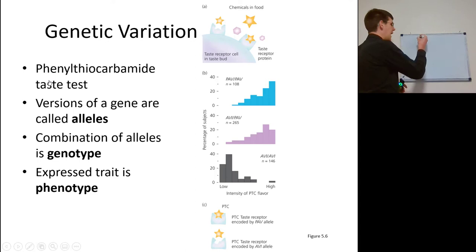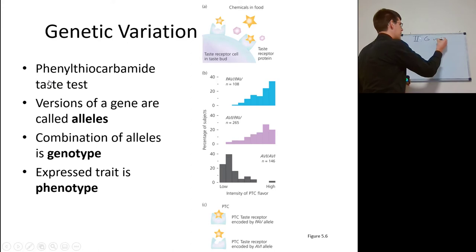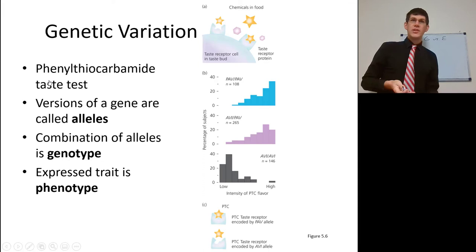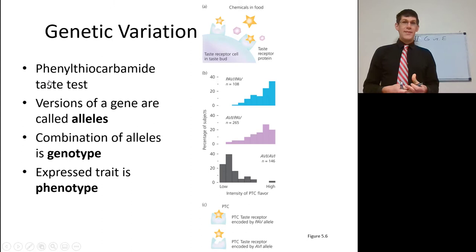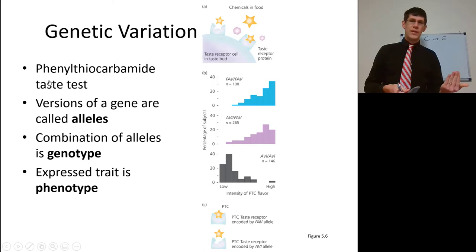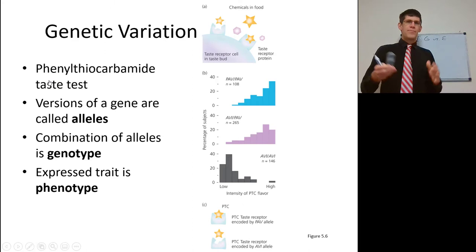Now let's get into the fun stuff. We're going to call this the G versus E — genetics versus the environment. Variation can occur by genetics or by environment — nature versus nurture. Van Gogh had only one ear: that was an environmental factor because he was born with two ears. His genes coded for two ears, but his environment caused him to cut off an ear. That's an environmental factor. Let's look at genetic factors first.